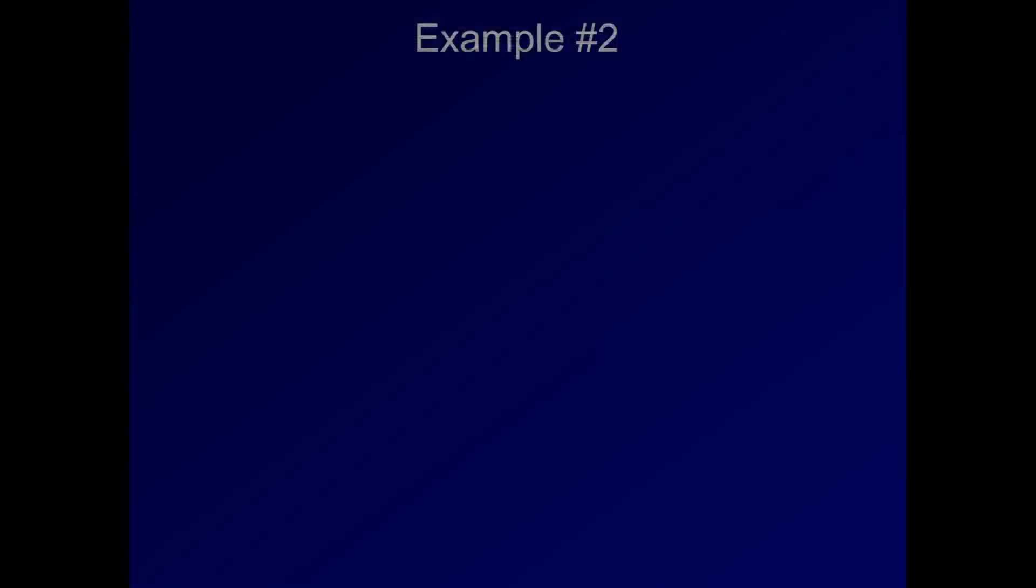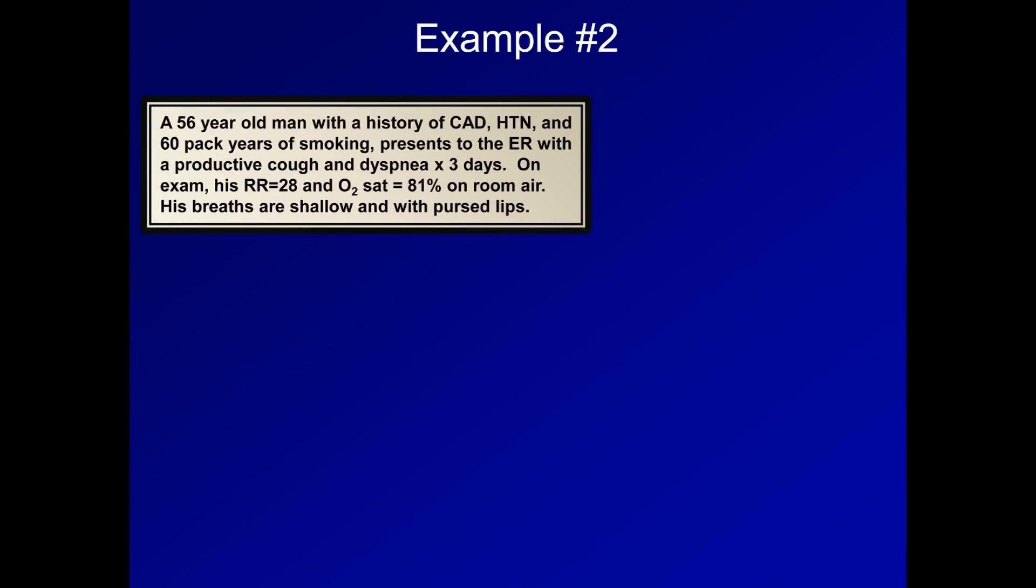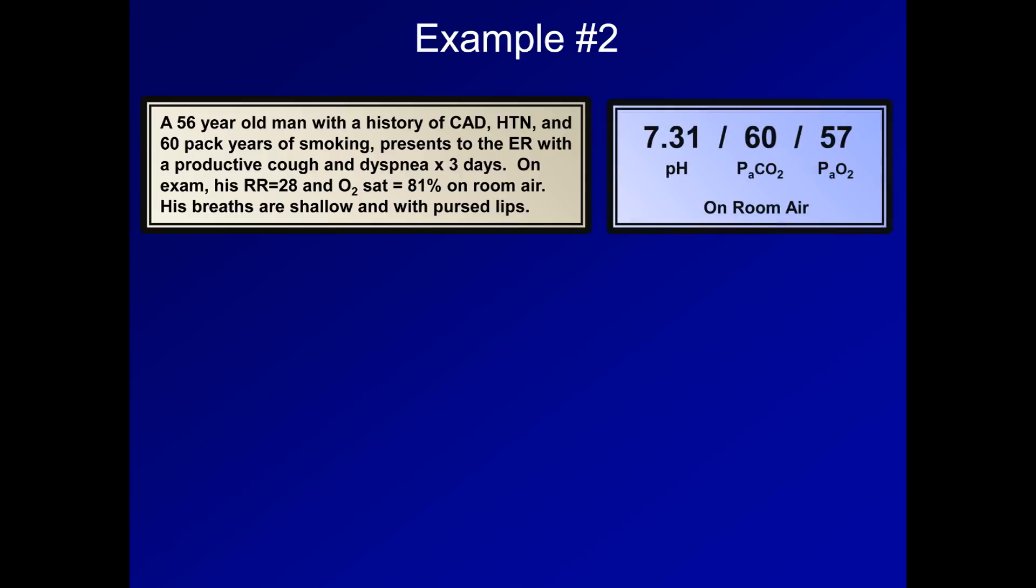Let's take a look at another example. A 56-year-old man with a history of coronary artery disease, hypertension, and 60 pack years of smoking presents to the emergency room with a productive cough and dyspnea for three days. On exam, his respiratory rate is 28, and O2 saturation is 81% on room air. His breaths are shallow and with pursed lips. Here is his ABG.